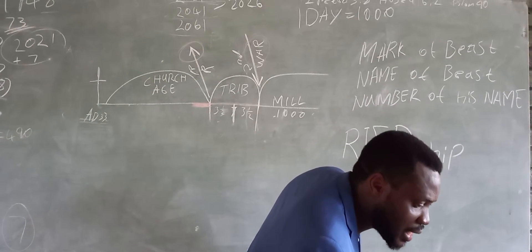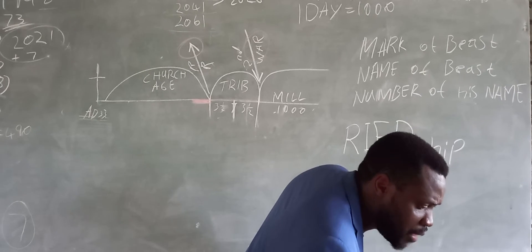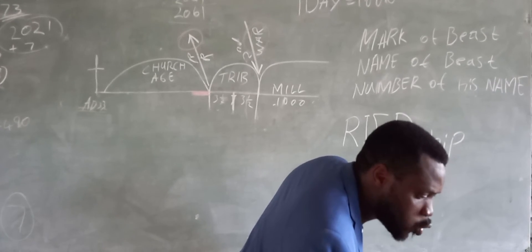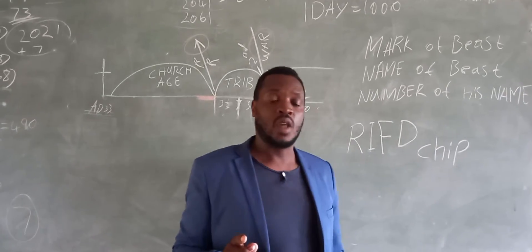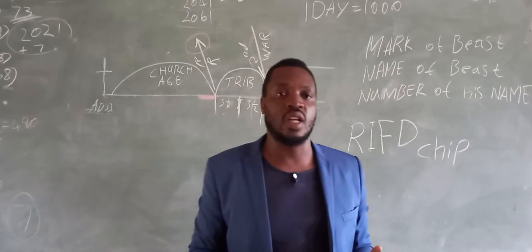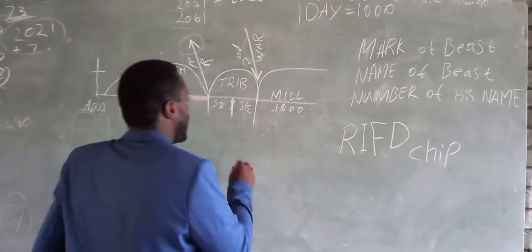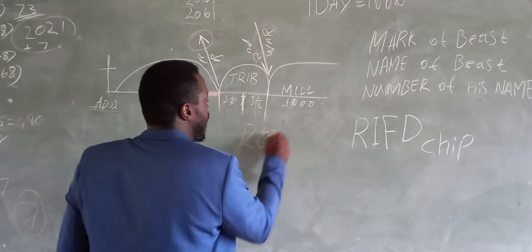He was granted power to give breath to the image of the beast, that the image of the beast both speak and cause as many as will not worship the image of the beast to be killed. What is the image of the beast? The image of the beast is either it can be a robot.